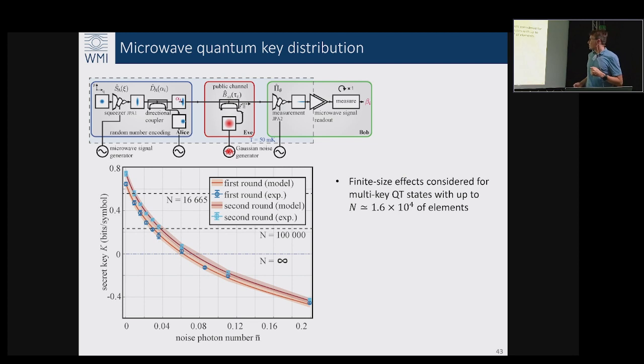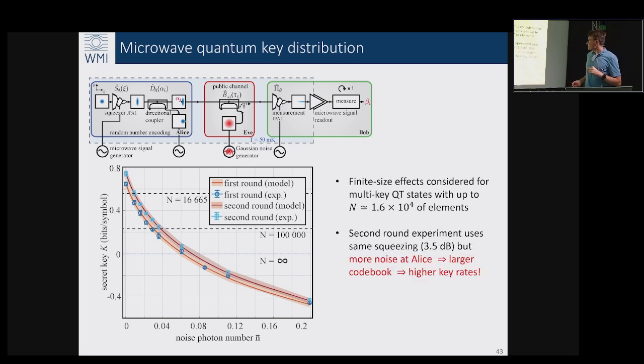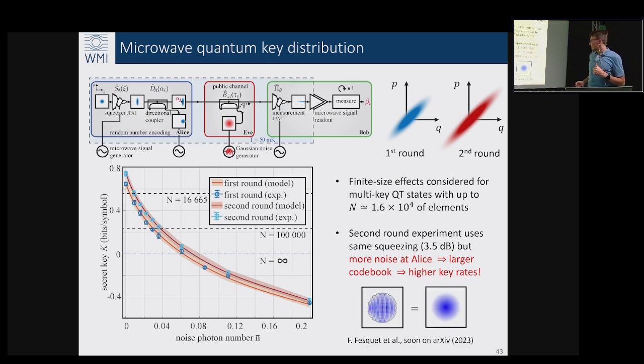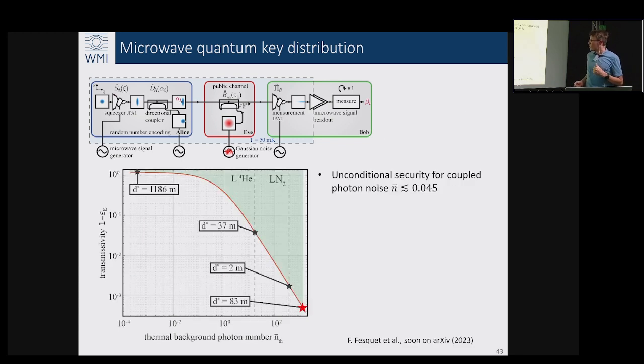Then what you do is subtract from this curve this curve and you obtain this very nice curve which tells you that indeed up to a certain number of noise photons you have the secret key rate transmitted by your microwave QKD. This was the first round of our protocol. We did lots of error analysis, we did a finite key analysis. What was more interesting is we considered recently the second round where we kept the same amount of squeezing but increased the anti-squeezing, so we used more classical noise which allowed us to see that using more noise in our protocol actually increases the secret key as long as this noise is trusted.